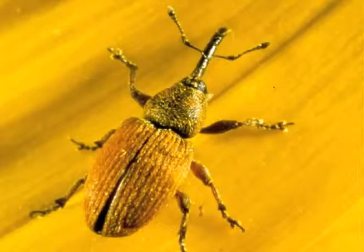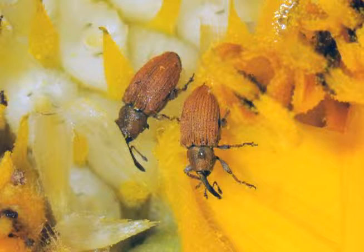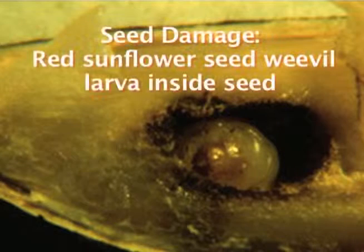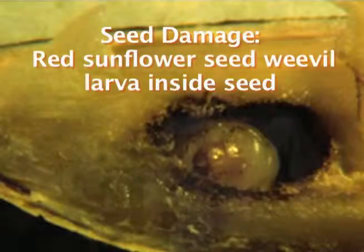Red sunflower seed weevil is about an eighth of an inch long and reddish brown in color. The larvae consume about a third of the kernel, which reduces the seed weight and oil content of the sunflower.